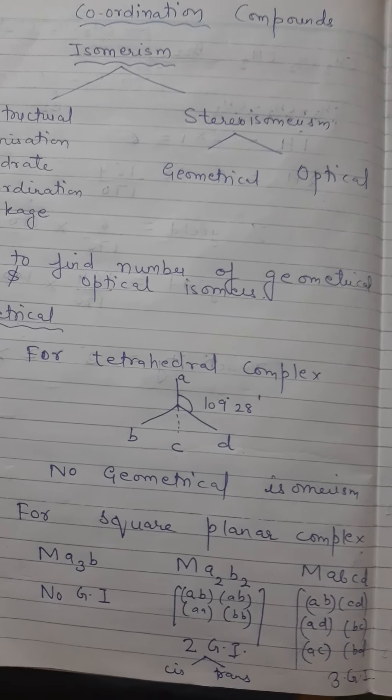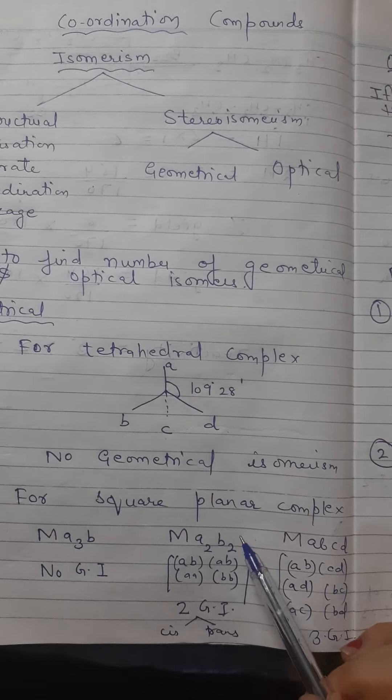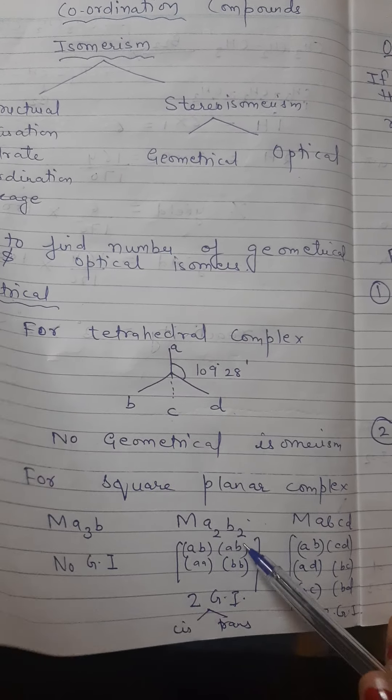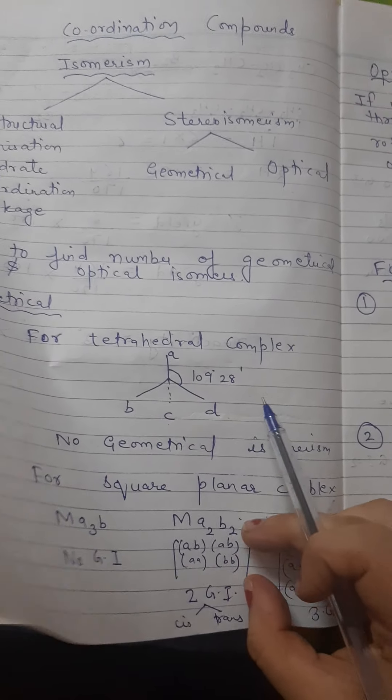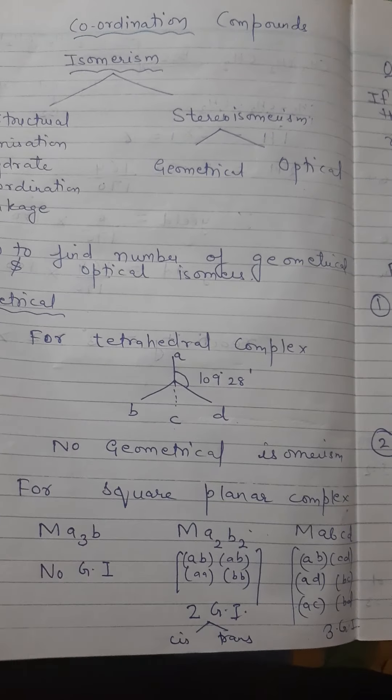For MA2B2, you will write the combinations first. A2B2 can be a combination of ABAB or AABB. So what is the number of isomers? Two - cis and trans.